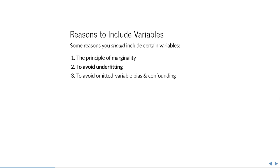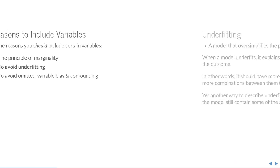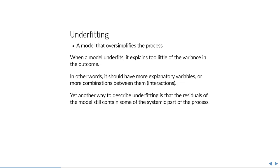Another reason to include certain variables is to avoid underfitting. Underfitting is simply when you have a model that oversimplifies the process — the model explains too little variance in the outcome. It should have more explanatory variables, more combinations between them, or be more complex to reflect the real biological process. In other words, there is still some structure left in the residuals from the systematic part of the process — there is still more to extract to have a good model.